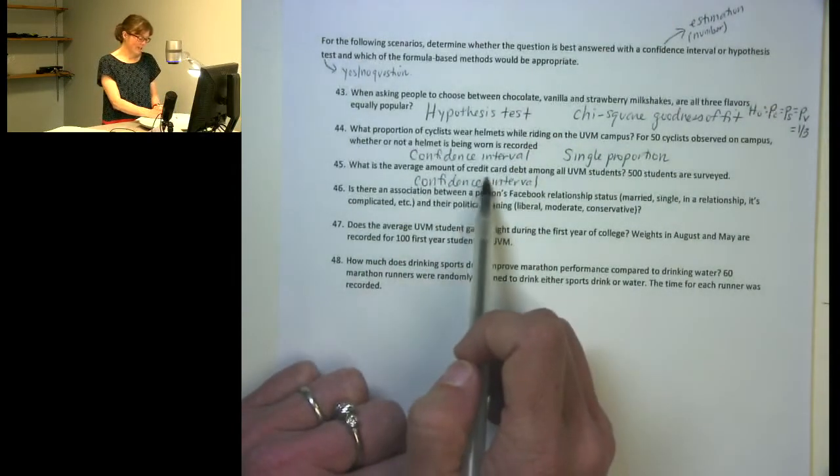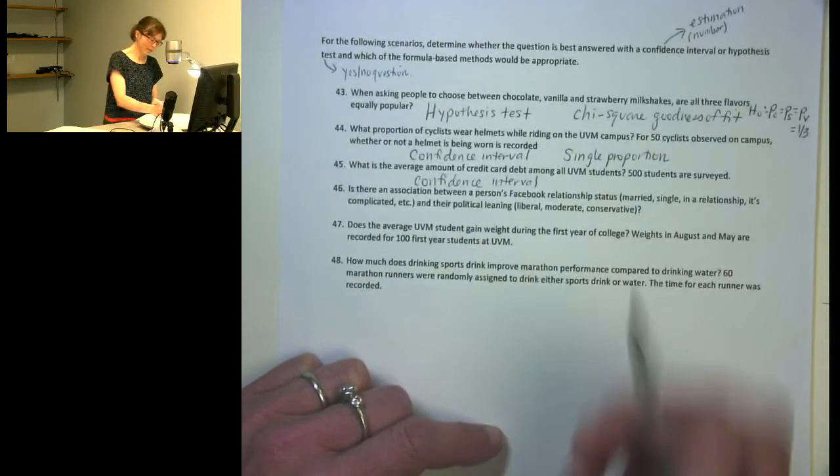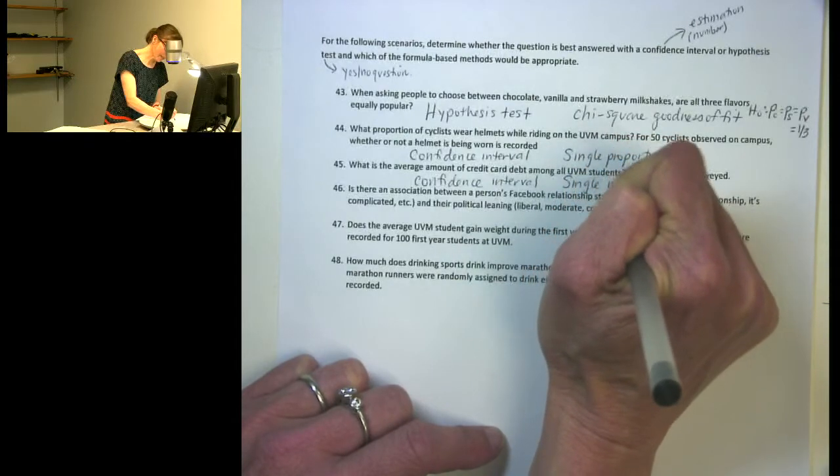Presumably, I'd be asking each student how much credit card debt they have, which would be a quantitative variable. So I'd be making a confidence interval for a single mean in this situation.